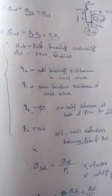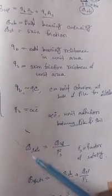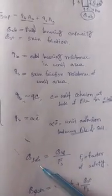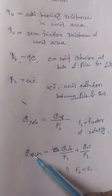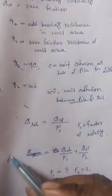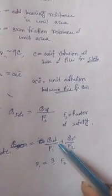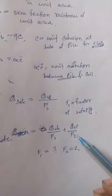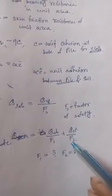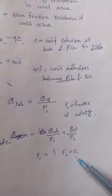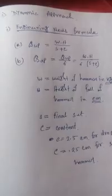The safe bearing capacity is obtained by dividing the ultimate bearing capacity by the factor of safety. Q safe equals to QEB divided by F1 plus QSF divided by F2, where F1 equals 3 and F2 equals 2.